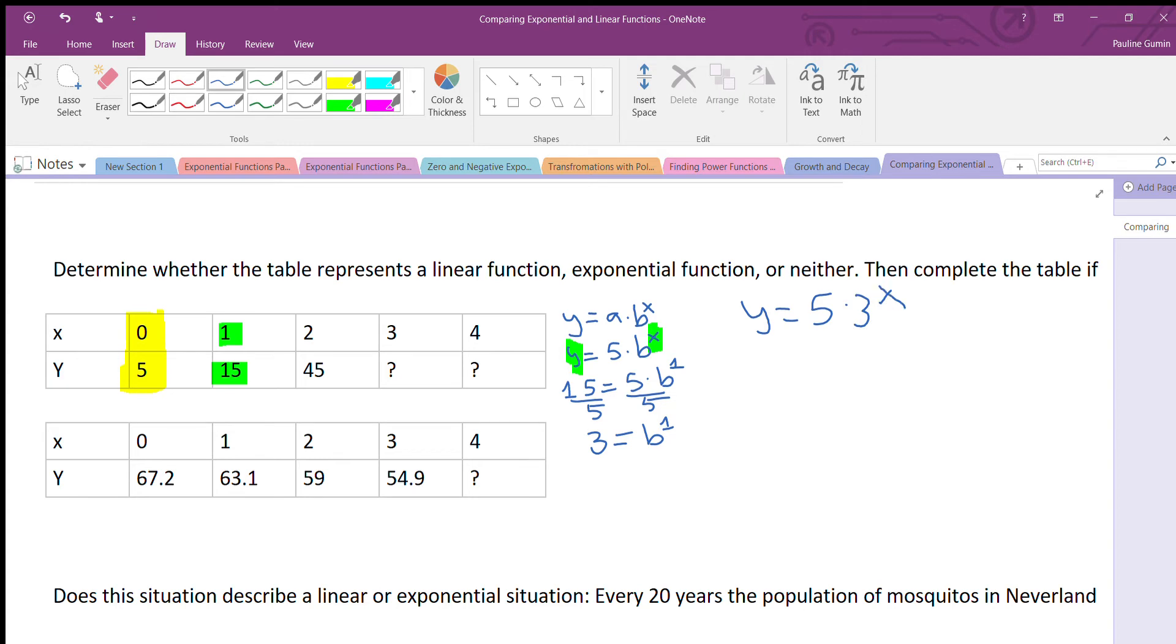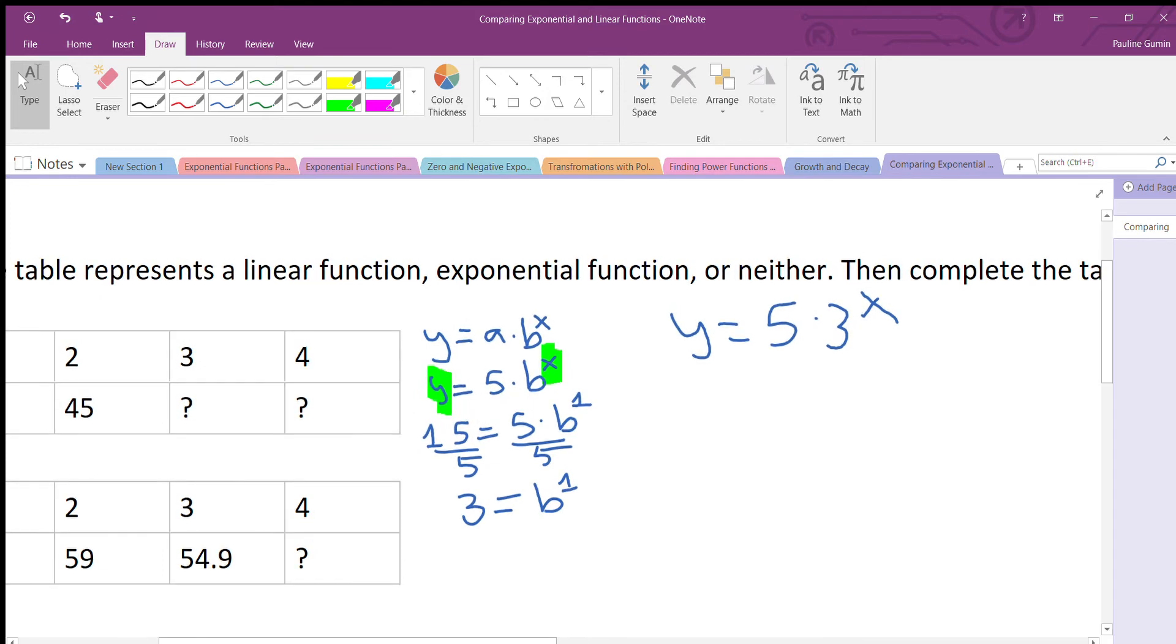Just in case, I'm going to make sure it works here. For the 2 and 45. I'm going to zoom in. So let's see. If I plug 45 in for y and 2 in for x, will this be true? 3 to the power of 2 is 9. Does 5 times 9 equal 45? It sure does. Perfect. We have the right equation.